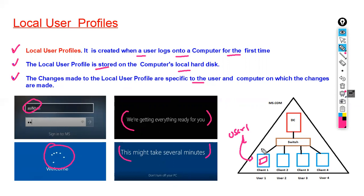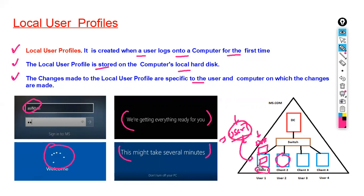For example, if a user logs on to a computer and creates a data folder, that data will be available on that computer only and is available for that user only. Other users can't access it, and if this user tries to log on to another computer, they will not find that data folder. It is specific to this user and this computer only.